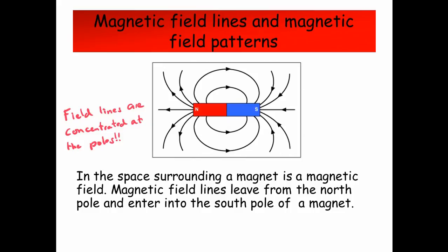Magnetic field lines and magnetic field patterns. In the space surrounding a magnet is a magnetic field. Magnetic field lines leave from the north pole and enter the south pole of a magnet. The field lines are concentrated at the poles.